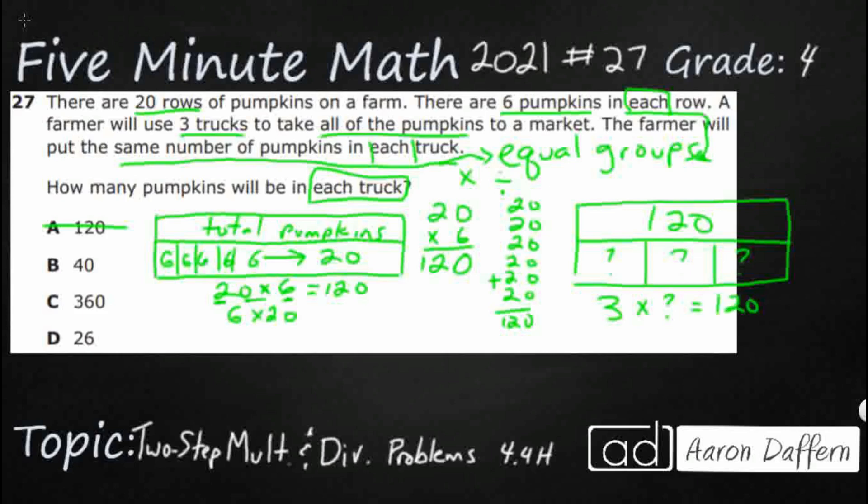But we could also just do a little bit of long division. 120 divided by three. That's going to get us our whatever. So let's look at it both ways. We'll start with our long division. That's probably the safest way. Got my 120 divided by three.